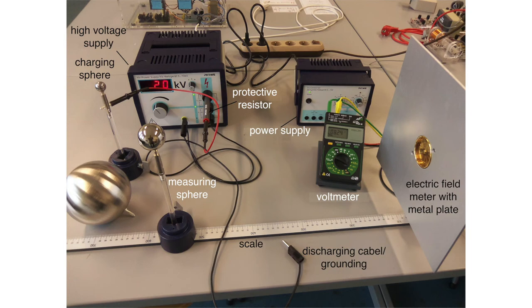The equipment includes a protective resistor, measuring and charging spheres with 2, 4, and 12 cm diameter, an electric field meter with metal plate and power supply, a voltmeter for reading the electric field meter, and a scale.